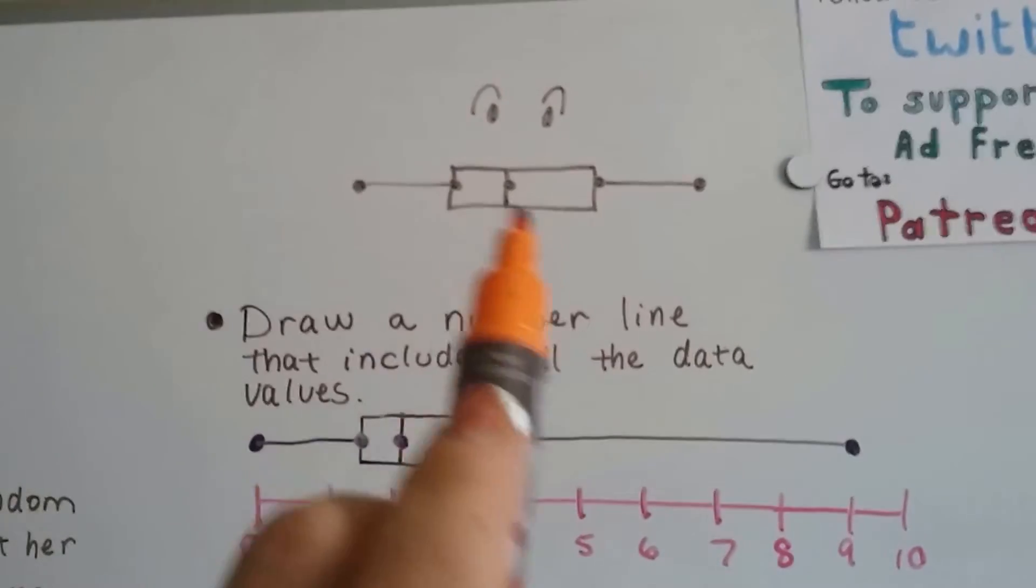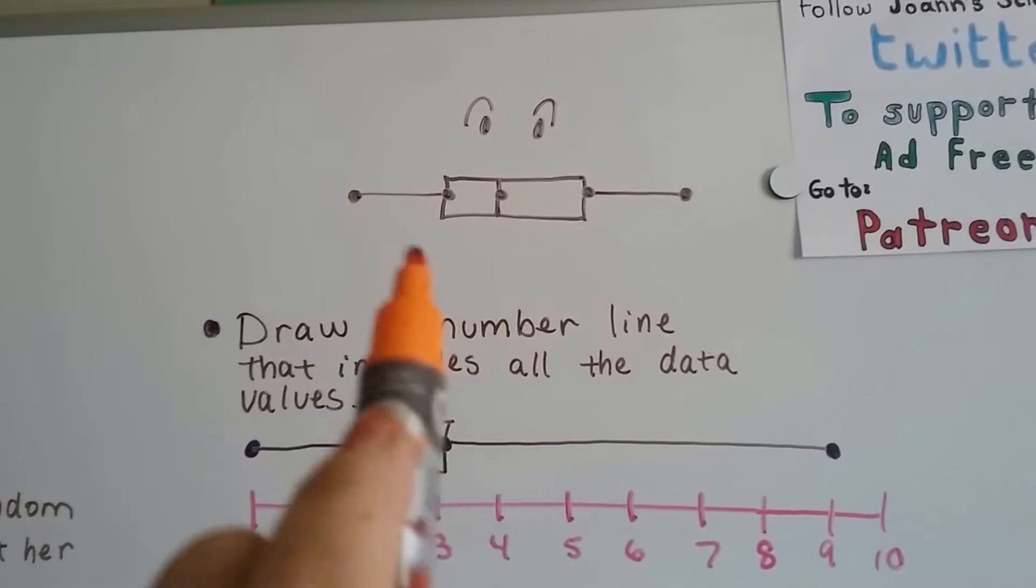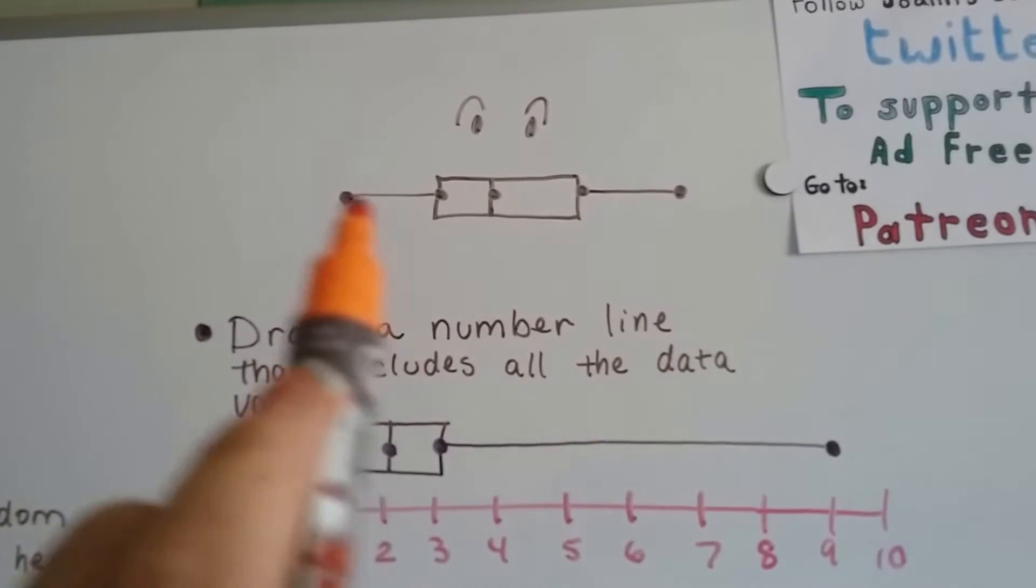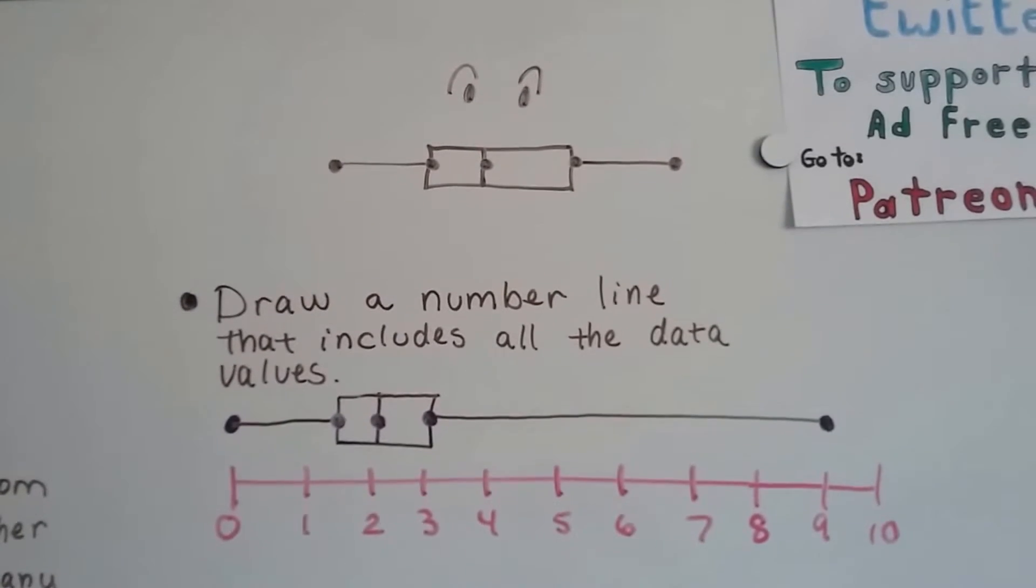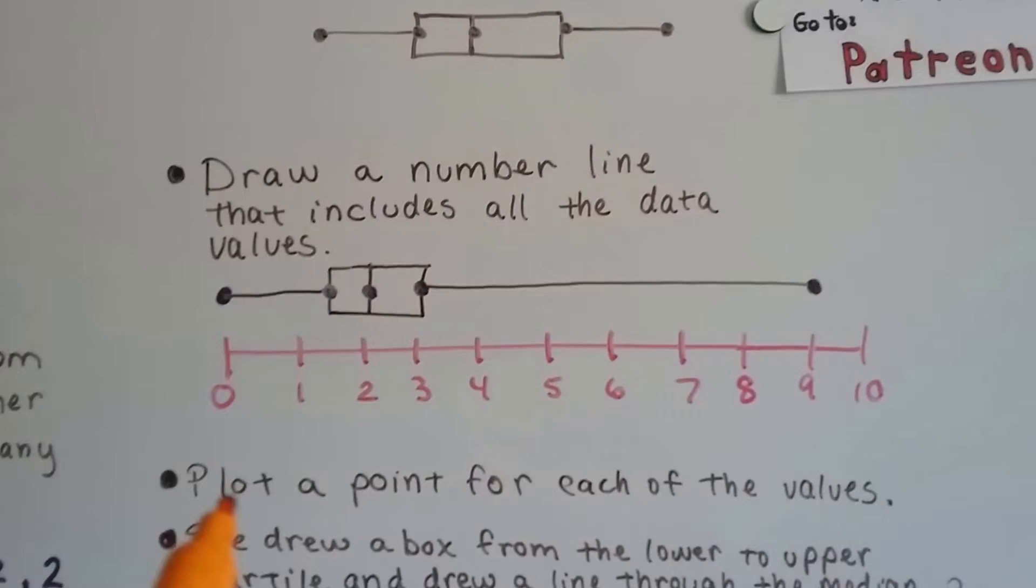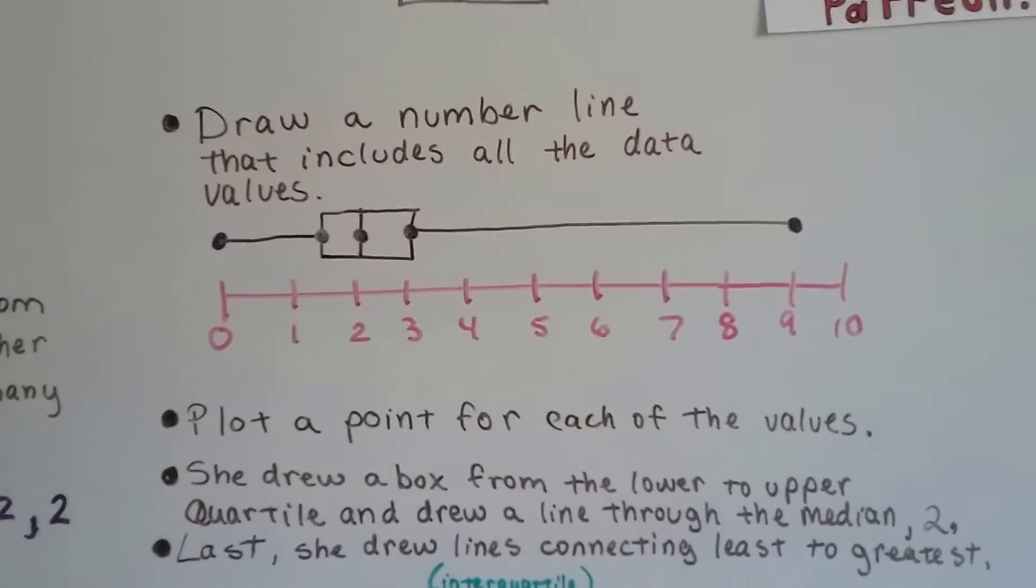The box and whisker plot is called that because you put a box around the important values and the lines coming out to the side for the least and the greatest look like whiskers.